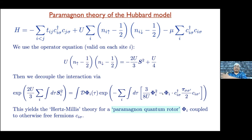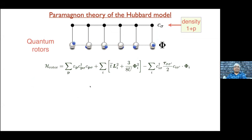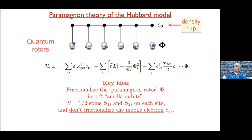If you put some kinetic energy for φ, this is the angular momentum of a rotor — a particle on a sphere with some moment of inertia, which can have spin 0, 1, 2, and so on, coupled to electrons. This is formally an exact representation of the Hubbard model. Now I'm going to fractionalize the rotors: I write each rotor as two coupled spin-1/2 objects — precisely the two lowest levels of a rotor, throwing out spin-2 and higher, keeping spin-0 and spin-1.